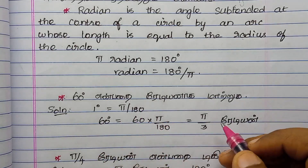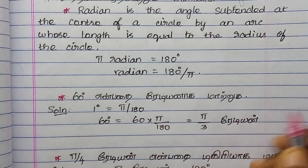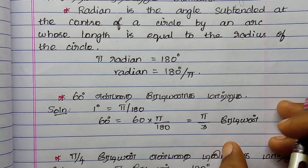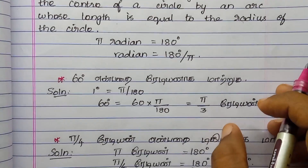We cancel the degrees to get π by 3 radians — so that is our answer.